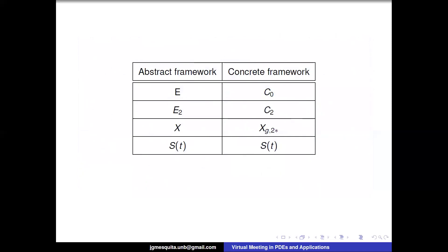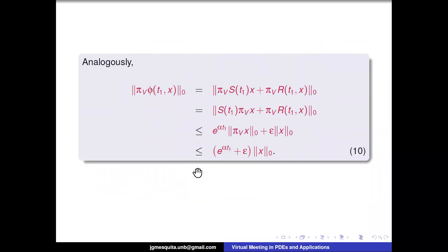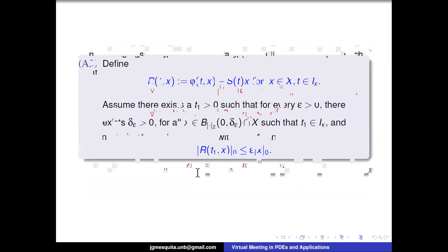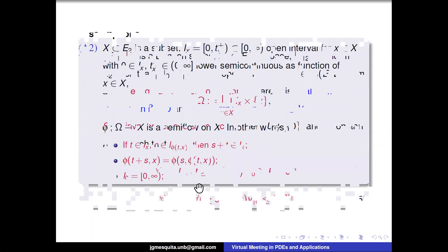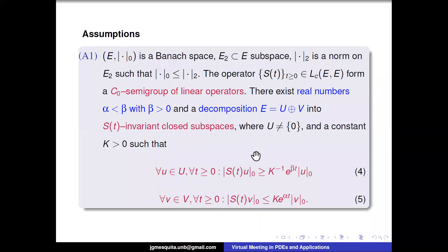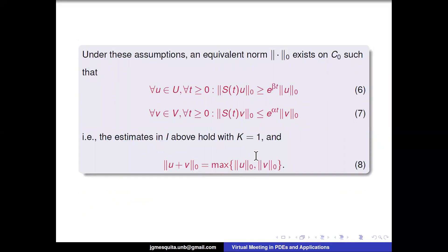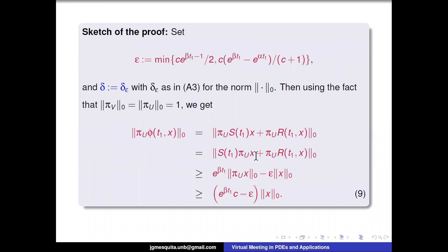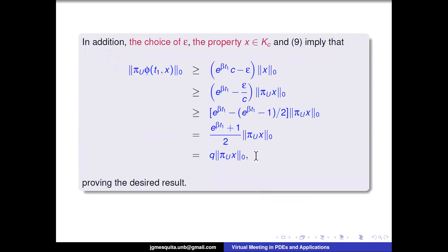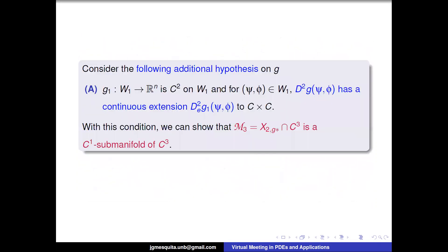As noted, we proved these results in the abstract framework, but we can translate everything to our concrete framework. Translating, we verify that all the conditions we imposed are satisfied when G satisfies its set of hypotheses. We can show the decomposition into stable and unstable parts holds in our specific model. So all conditions are satisfied, and we can translate the local cone invariance and expansion to our concrete framework, allowing us to prove the linearized instability result.